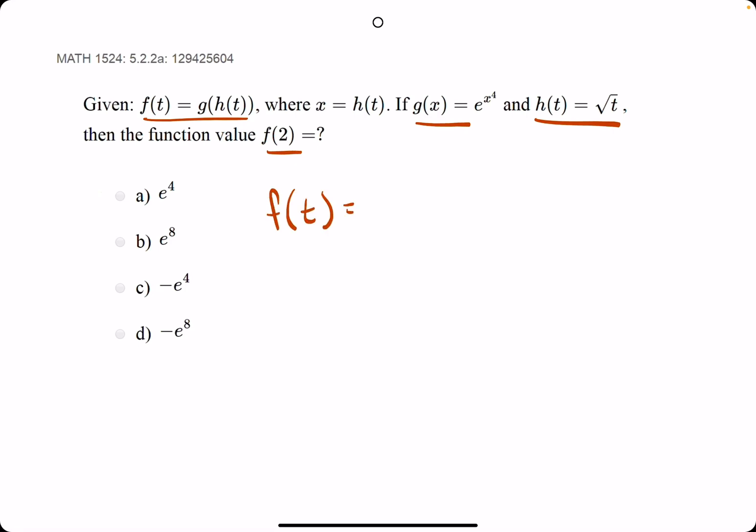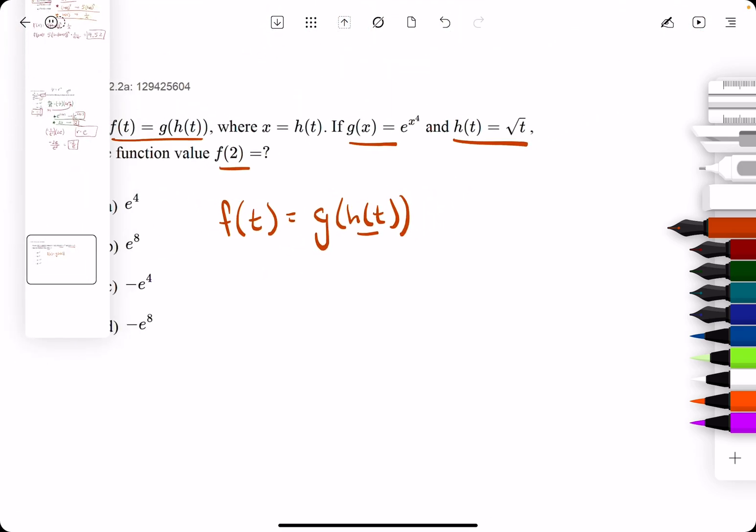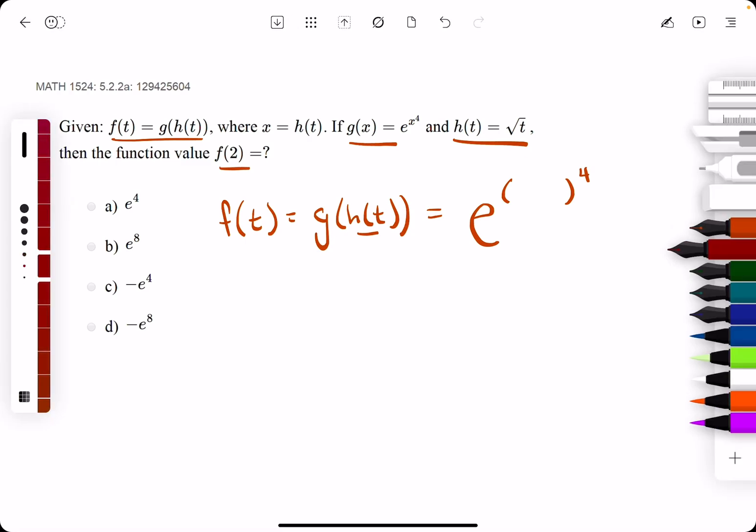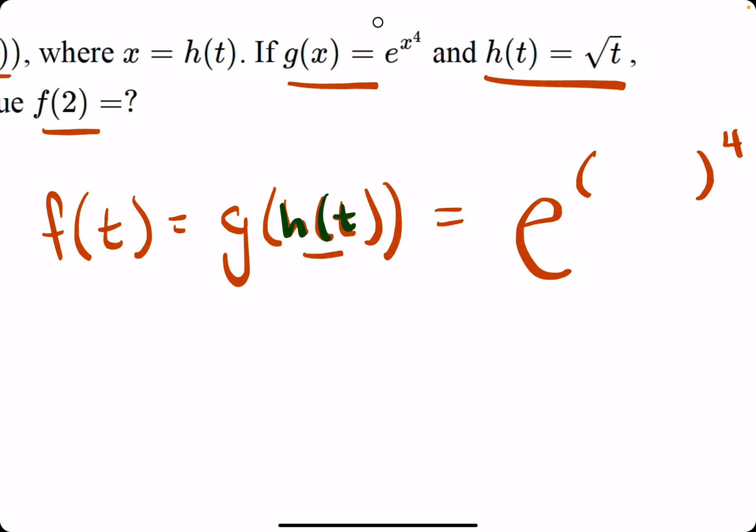So we're first just finding f of t, which is g of h of t, which means we are plugging in the function h into the function g. So what I'll do first is lay out the function g, but I'll leave a nice space where the x should be. So we have e to the something to the fourth, and in place of that something,